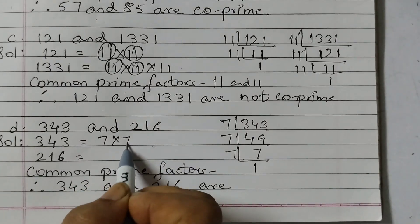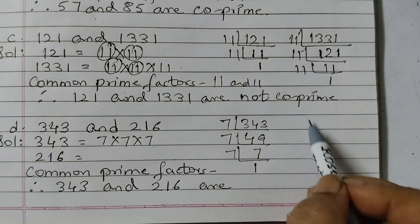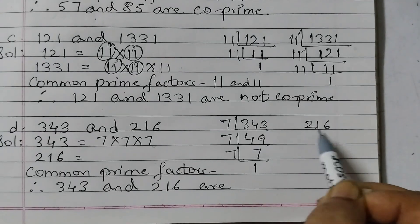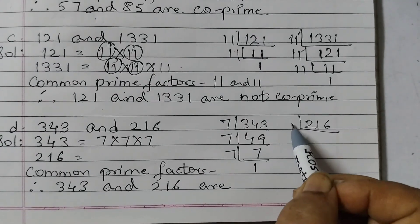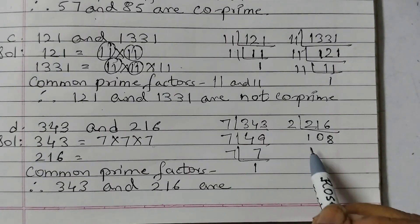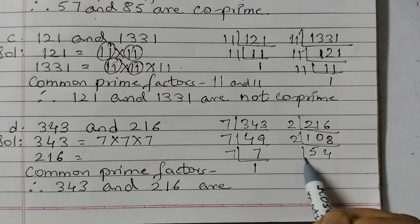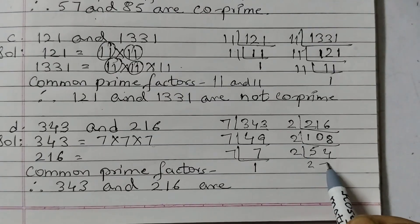And for this one, it's 216. 216 we can do by 2. 2 ones are 2, 0. 2 eights are 16. And then this is again 2. 2 fives are 10. 2 fours are 8. 2 into 27.